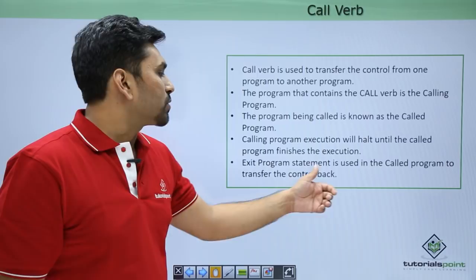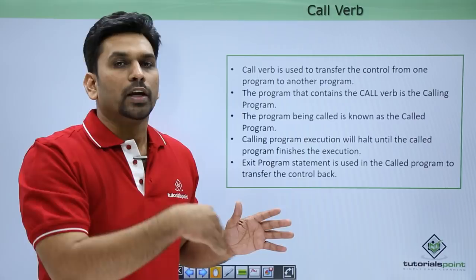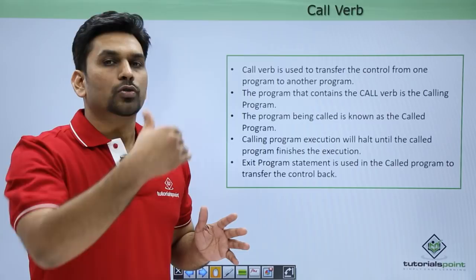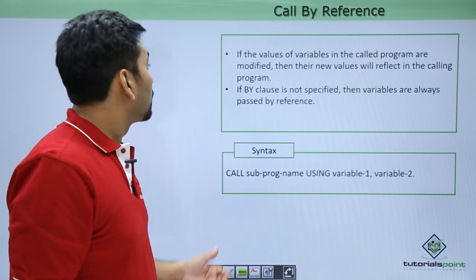The EXIT PROGRAM statement is used in the called program. In module 2, the called program, you need to give the EXIT statement; otherwise it will never come back to program 1 and will keep running in the same program. If you have a STOP RUN in module 2, execution will stop there and control will never come back to the main module. So always code EXIT PROGRAM in the called module.